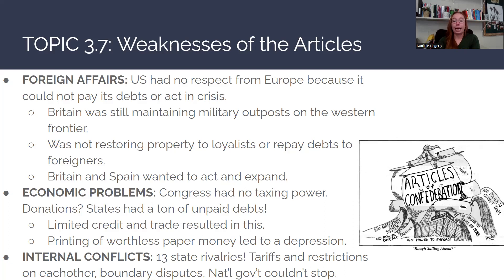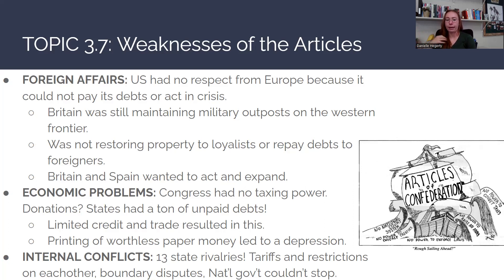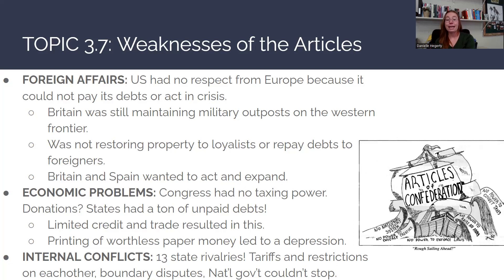Economically, Congress had no taxing power and was mainly asking for donations from each state to fund the government. States had tons of unpaid debts themselves. This led to limited credit and trade — the U.S. was locked out of trade contracts with other nations because they weren't considered trustworthy to pay money back. Many states started printing large amounts of worthless paper money, causing inflation, which led to an economic depression under the Articles of Confederation.